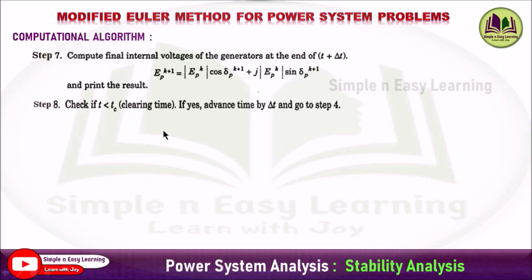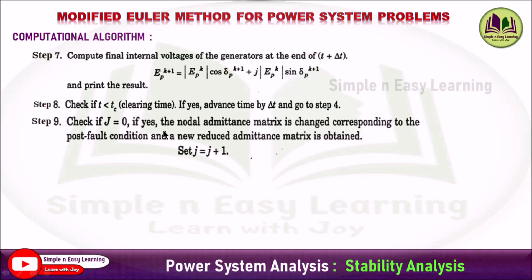Now check the fault clearing time condition: check if t is less than the clearing time tc. If yes, advance the time by delta-t and go to step 4 to find the state derivatives. If t is greater than the clearing time, go to the next step. Check for the nodal admittance matrix: check if j equals 0. If so, the nodal admittance matrix is changed corresponding to the post-fault condition and a new reduced admittance matrix is obtained. Set j equal to j plus 1 (from 0 to 1), then set t equal to t plus delta-t (i.e., k equal to k plus 1) and go for the second iteration.